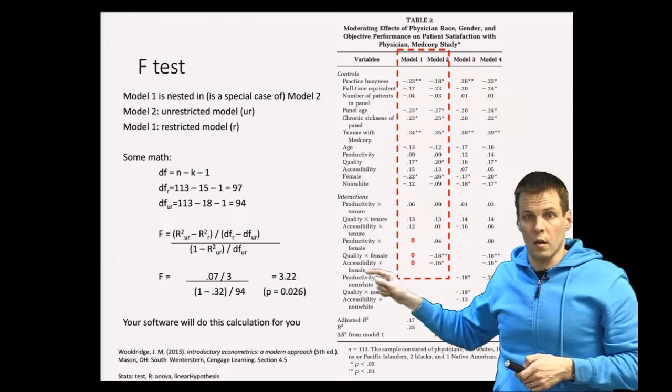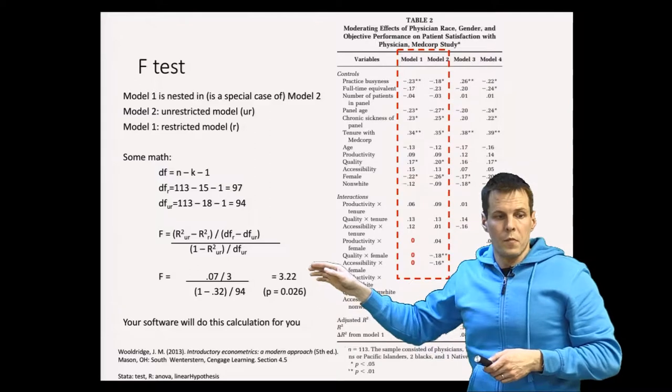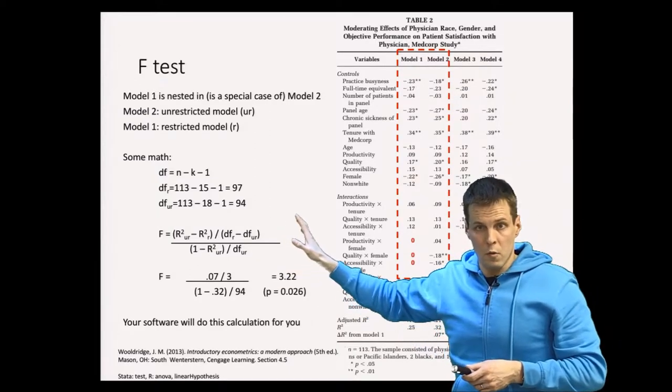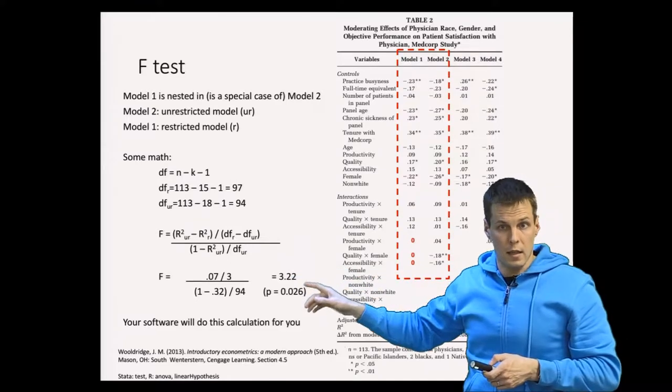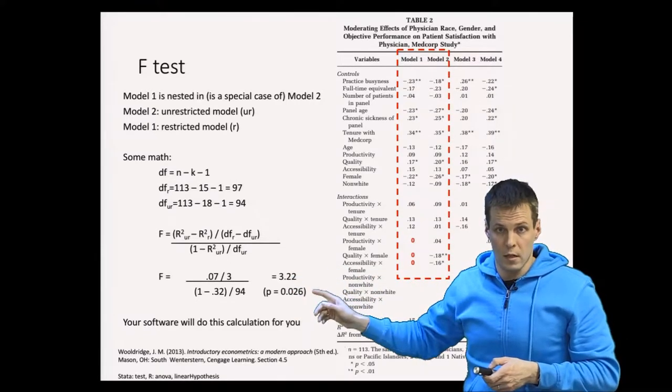Then we do some math. We calculate the sum of squares or r-square of these models. We compare that to degrees of freedom. We get the statistic that follows the F-distribution.